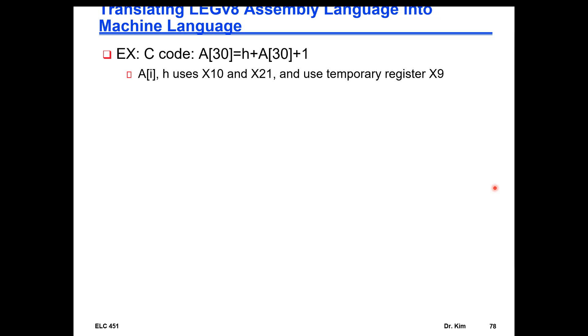Also, let's further assume that the array A and H uses registers 10 and 21 respectively. And we're also going to use a temporary register X9. So we're going to use X9 as a temporary register.